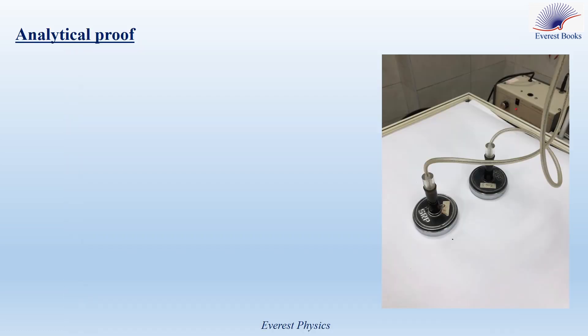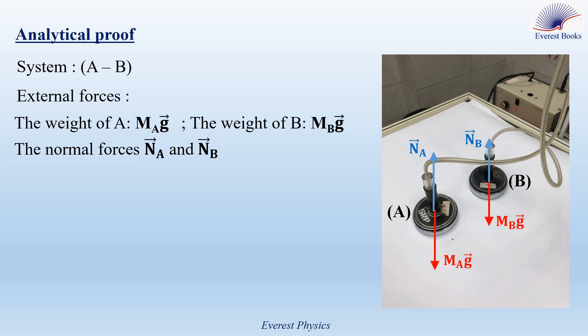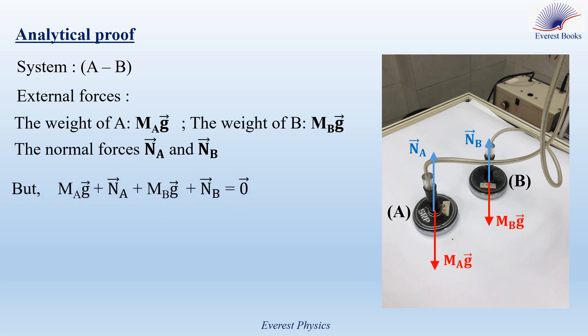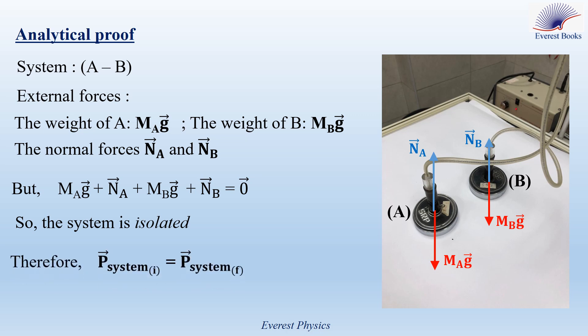Before moving to the experimental verification of the conservation of linear momentum, let's prove this principle analytically. Our system is AB, the two pucks. The external forces acting on the two pucks are the weight of A (MAG), the weight of B (MBG), and the normal forces NA and NB. Using the earth table best simulates a frictionless surface, so we don't have friction here. These vertical forces do not participate in the horizontal motion of the pucks, so the vector sum of these forces is equal to zero.